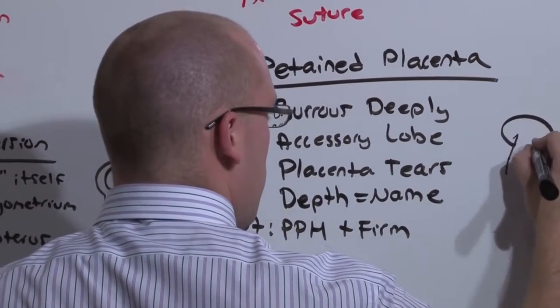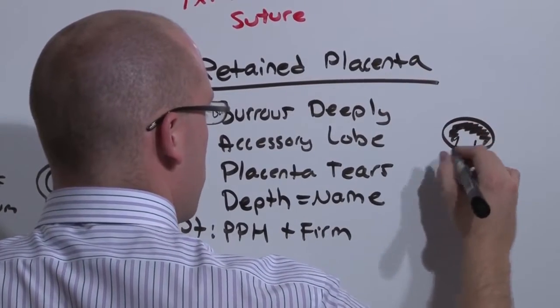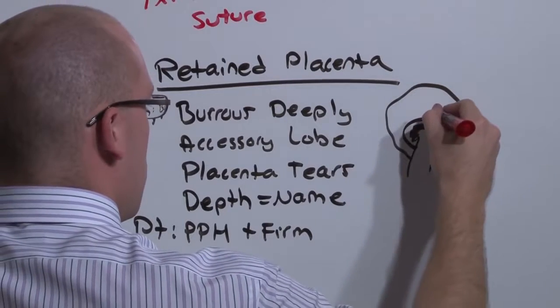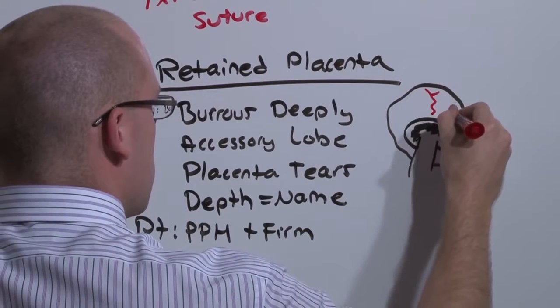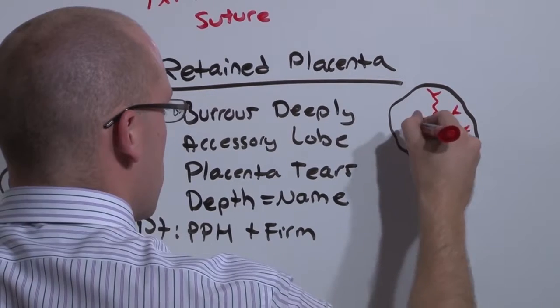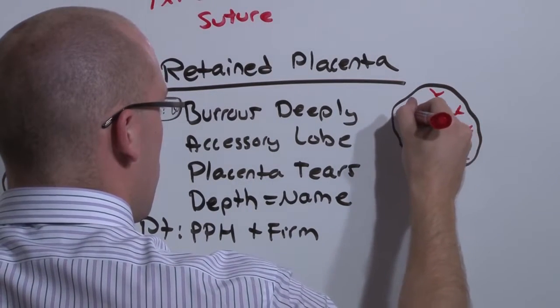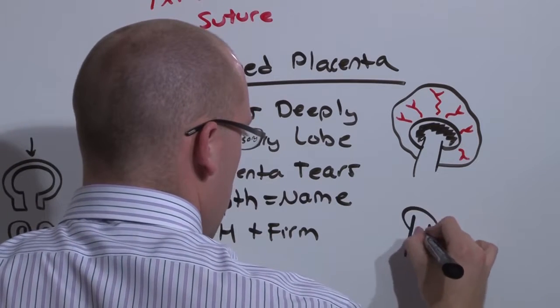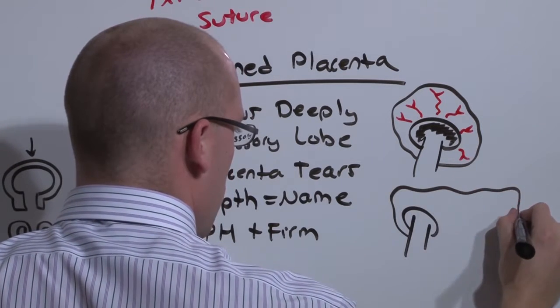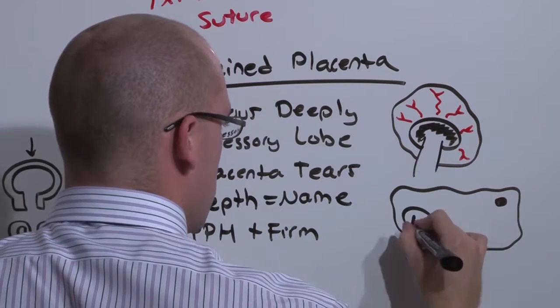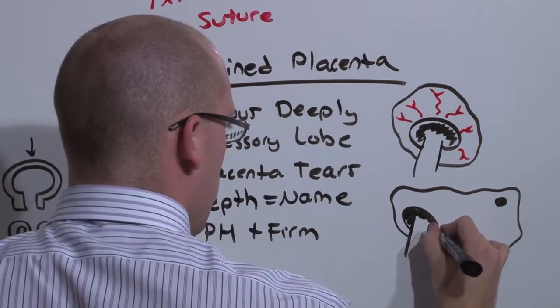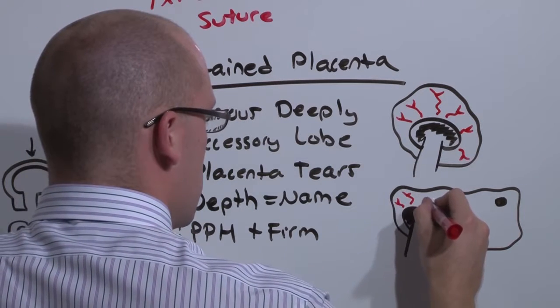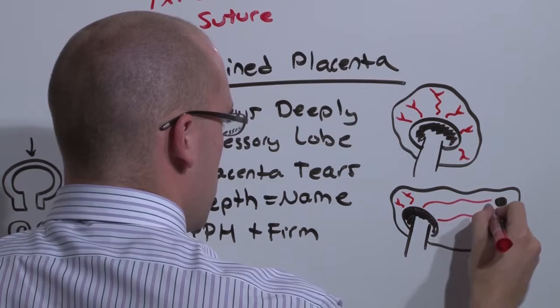So a normal placenta looks like this. And it's got one big vessel that goes to baby. And the placenta's blood vessels don't ever go to the surface. And if you can imagine that if you had an accessory lobe, for example, it's easier to understand as an accessory lobe than it is one burrowed very deeply, that the blood vessels would never go to the edge, but they might connect the two lobes.